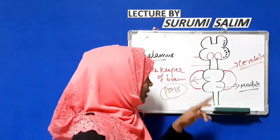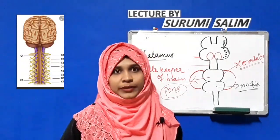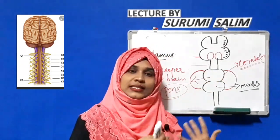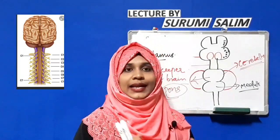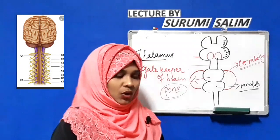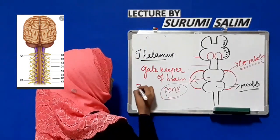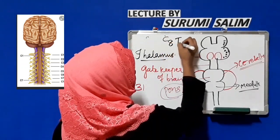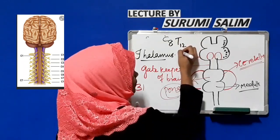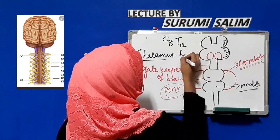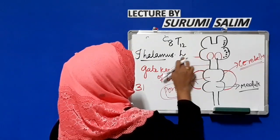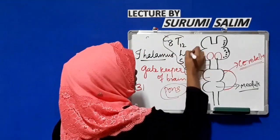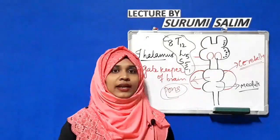Now we will see the spinal cord. The spinal cord receives sensory impulses and sends motor impulses from the brain. It consists of 31 segments: cervical (C8), thoracic (12 segments), lumbar (5), sacral (5), and coccyx. There are 12 pairs of cranial nerves — 12 if asked in pairs, 24 if asked in total numbers.